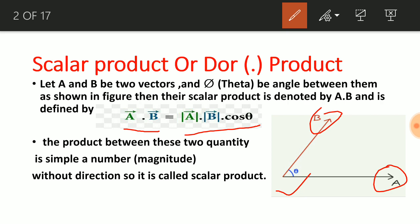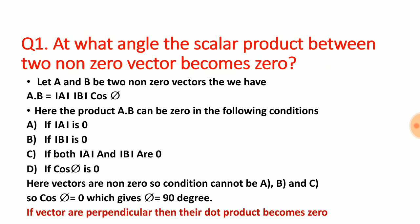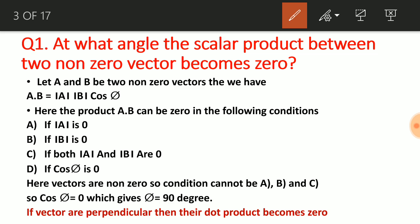Now let us see some questions on scalar product. The first question: at what angle does the scalar product between two non-zero vectors become zero? We know the definition A·B = AB cosθ. This product can be zero if magnitude of A is zero, magnitude of B is zero, both are zero, or if cosθ is zero.